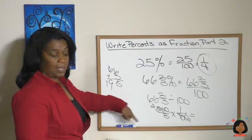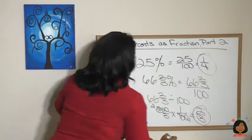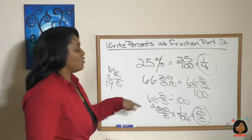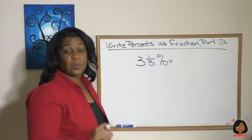And now we simplify. Well, 100 and 200 can be simplified. This is gonna be a 2. And let's multiply across. We get 2/3. So 66 and 2/3 percent reduces down to 2/3.